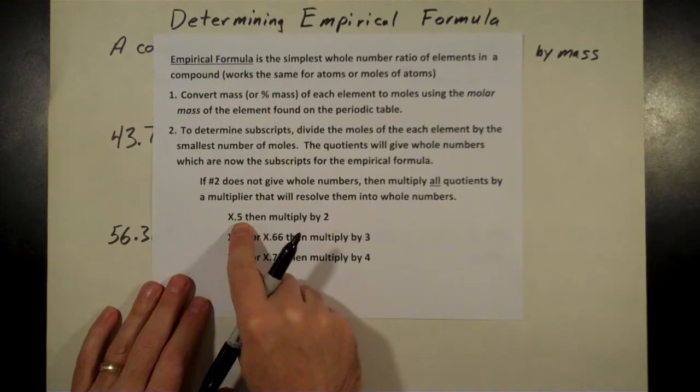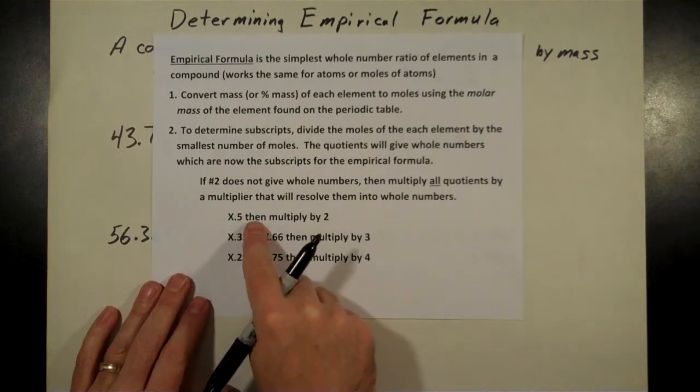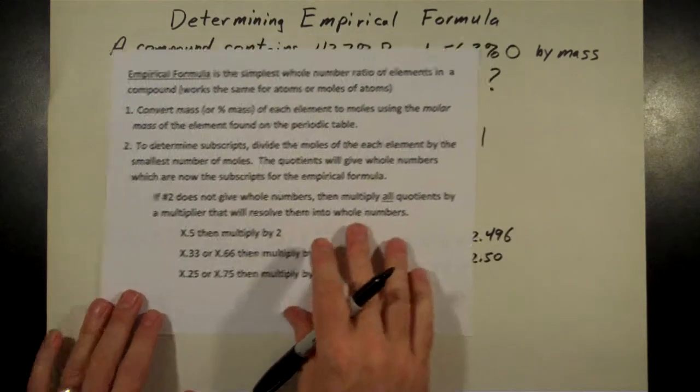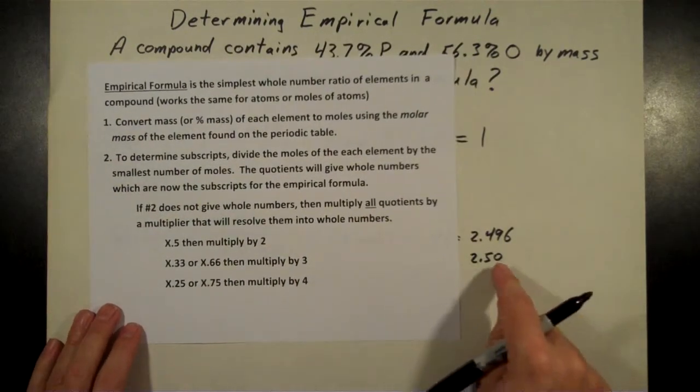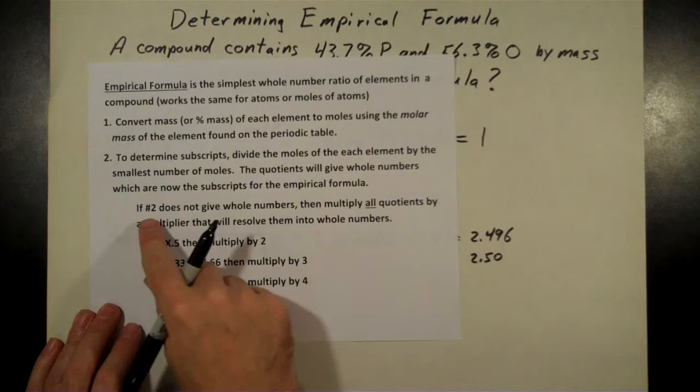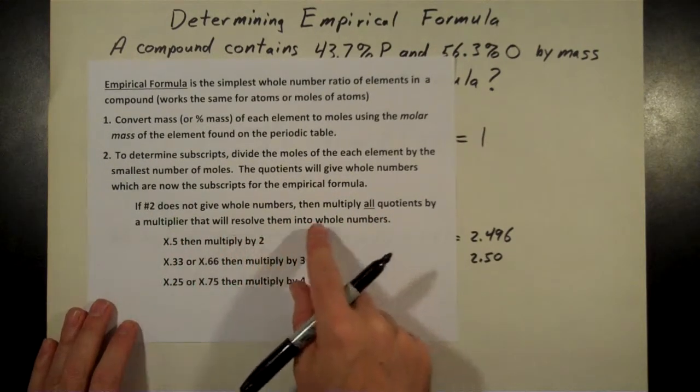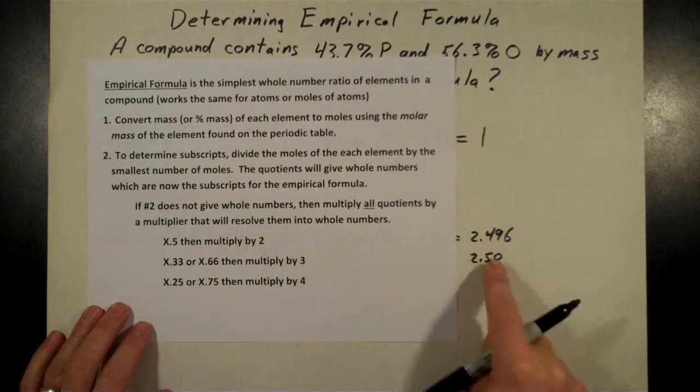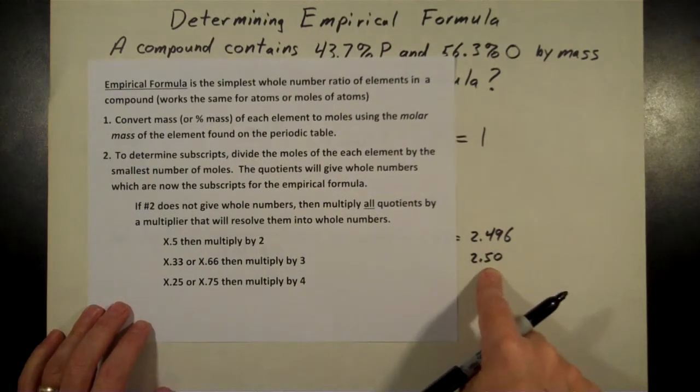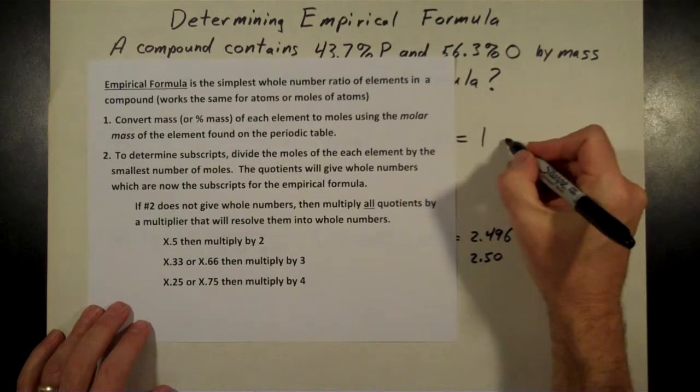If you get a number followed by a 0.5, then multiply everything by 2. In the case we've got here, we didn't get whole numbers for each of these. When we have essentially half an atom, that's what that 0.5 means, we're going to multiply everything by 2.